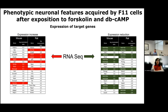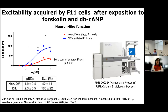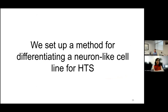We observed that the differentiation process induces the expression of genes related to calcium and sodium signaling, such as genes encoding Nav1.8 and Nav1.5 voltage-dependent sodium channels, and also genes related to neuronal function such as those encoding neurogenin or SHC protein. On the other hand, differentiation induced a reduction in the expression of genes encoding proliferation markers. Differentiation also induces an increase in the excitability of F11 cells, as seen by the response to the depolarizing agent potassium chloride. Thus, we set up a method for differentiating a neuron-like cell line for high-throughput screening.